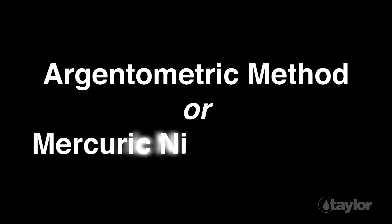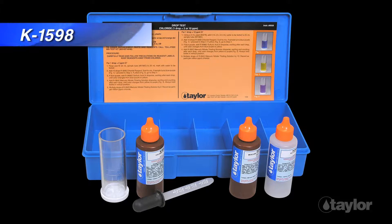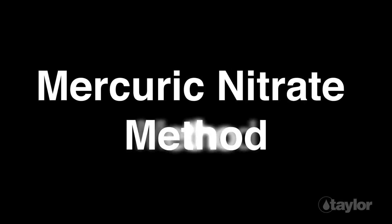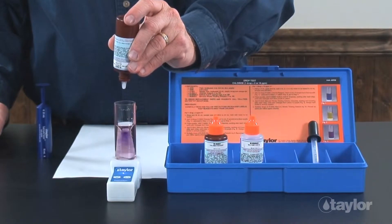Chlorides are determined with a drop test, using either the argentometric method or the mercuric nitrate method. Taylor manufactures both types of test kits. Taylor's K1598, which we will be demonstrating in this video, employs the mercuric nitrate method. This method is preferred over the argentometric method, since the distinct color change signaling the endpoint is easier to recognize.